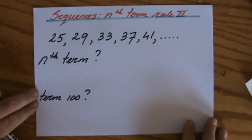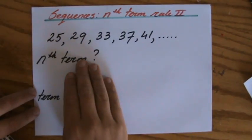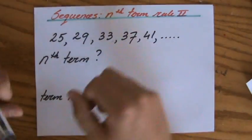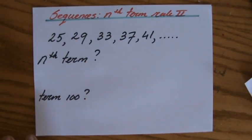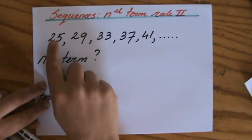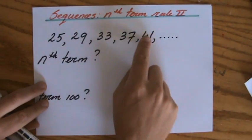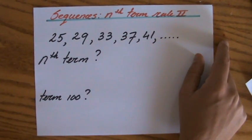We are looking at number sequences and we have to find the nth term rule, and then use that rule to find the value of term 100. And these are all terms: term 1, term 2, term 3, term 4, term 5, and on and on and on.